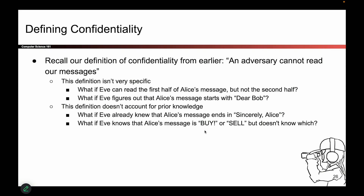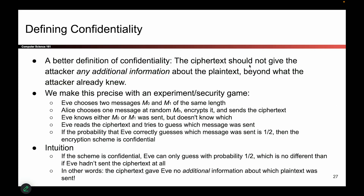What if Eve knew something beforehand? Maybe she already knew the last two words of the message. Maybe she knew that the message came from some finite set of possible messages — she just doesn't know which of the messages was being sent. All of these are cases that our definition doesn't really cover, so we need a more formal mathematical definition to answer some of these questions. That's what we're going to design next: before we design any schemes, we're going to come up with a better, more mathematically sound definition of confidentiality.